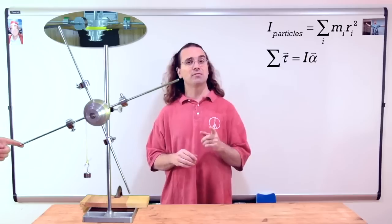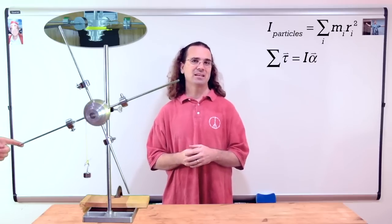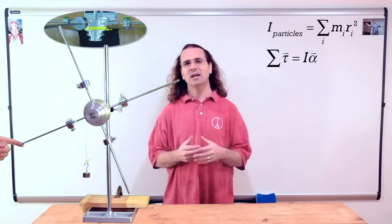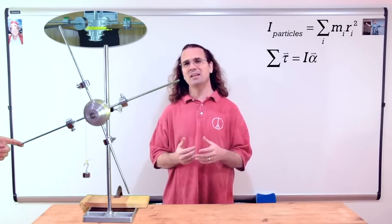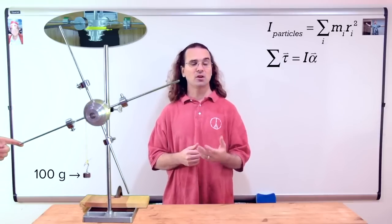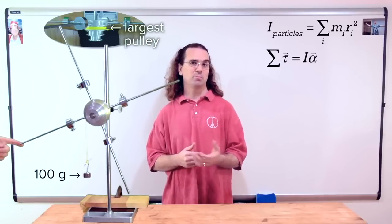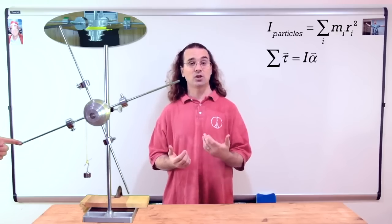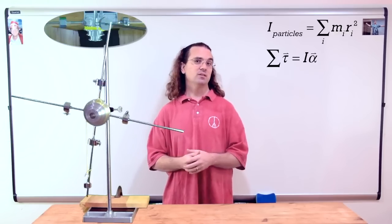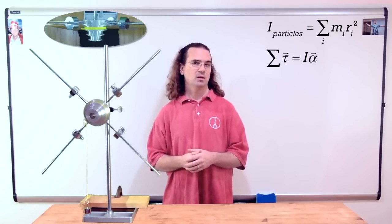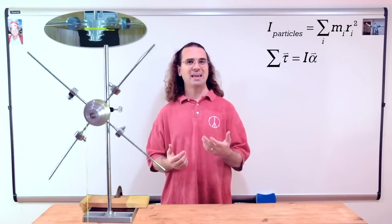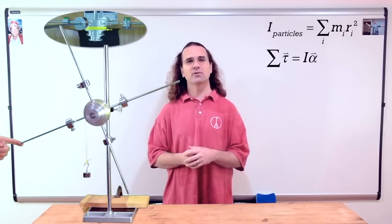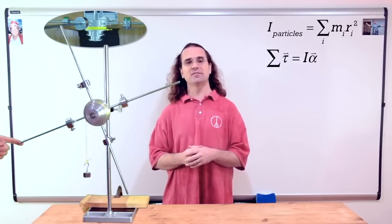Let's start with the four adjustable masses as close to the axis of rotation as possible, and let's suspend a 100 gram mass from the largest size pulley. Observe what happens when I let go of the system. The torque caused by the hanging mass causes an angular acceleration of the system.